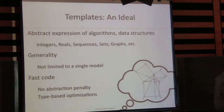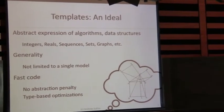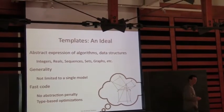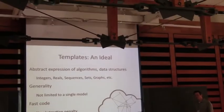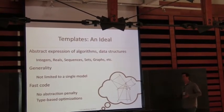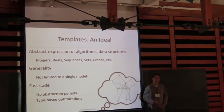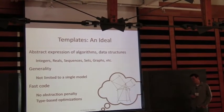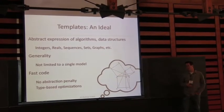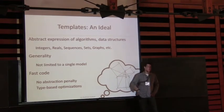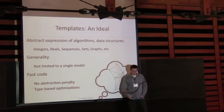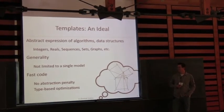Templates are great — we love them. They let us write nice abstract algorithms in terms of high-level concepts like integers, real numbers, sequences, sets, graphs. They're very general. Algorithms and data structures written in terms of concepts happen to be nicely adaptable to different implementation models. When we compile and instantiate templates, we don't have any abstraction penalty — the generated code is roughly what you'd write by hand. We can also take advantage of type-based optimizations, as discussed in the SIMD context.